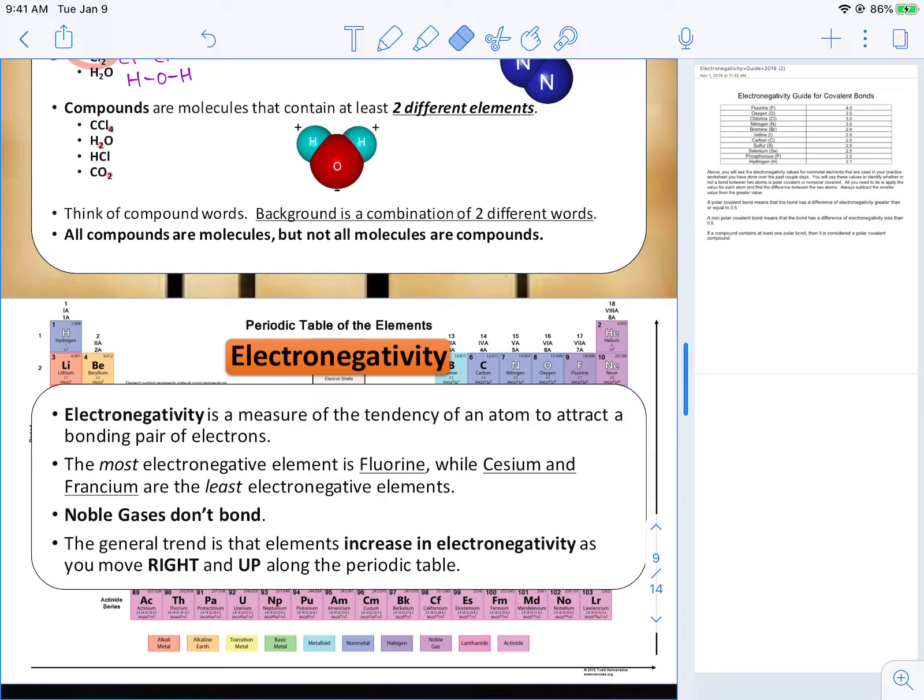Today we're going to talk about something called electronegativity. Electronegativity is how much an atom can pull on the elements that it's bonded to. It's kind of like a tug-of-war.